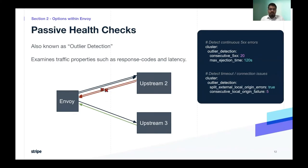The next option is passive health checks, which is also known as outlier detection. In this case, Envoy doesn't have to make extra calls to these upstream services to figure out if they are healthy. It simply relies on regular data plane traffic by inspecting properties of request responses, such as response codes, latency, or other attributes. The first configuration example says that Envoy should consider a host unhealthy if it returns 20 consecutive 5xx responses, and would then eject that host from the healthy pool for two minutes. The second configuration is used for detecting timeout or connection issues — Envoy considers a link unhealthy if there are 5 consecutive locally originating errors.